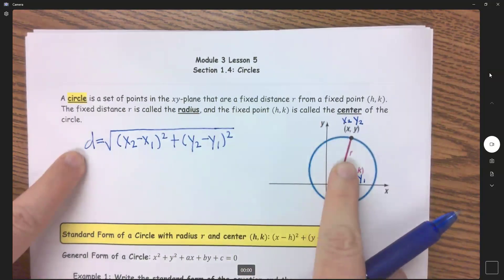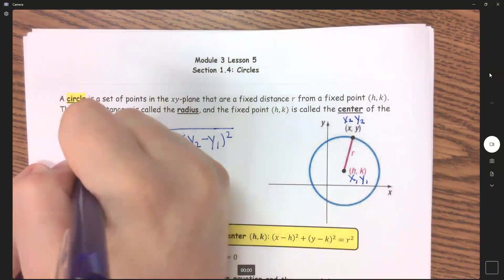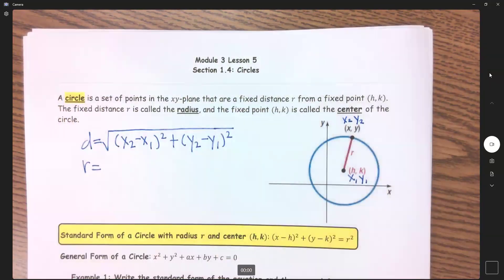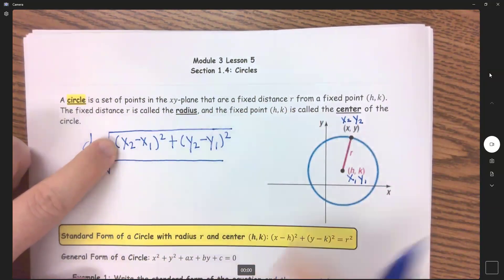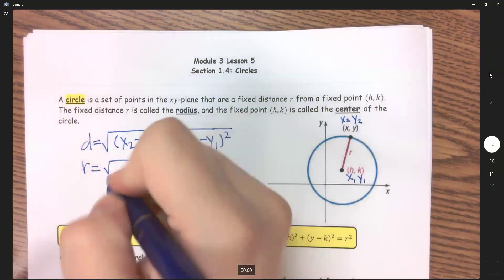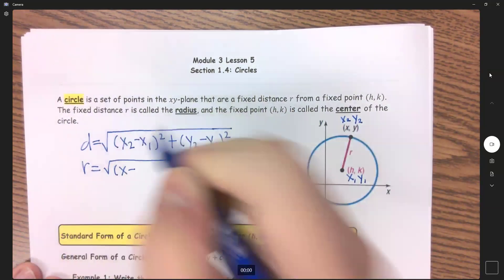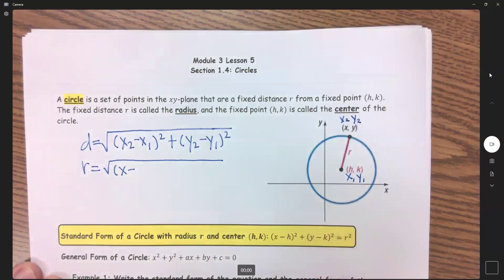And I will call this some random point on the outside of this circle my x2, y2. So if we are finding the distance of r, the distance of my radius, we would have r equals the square root